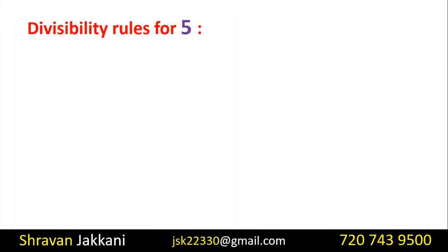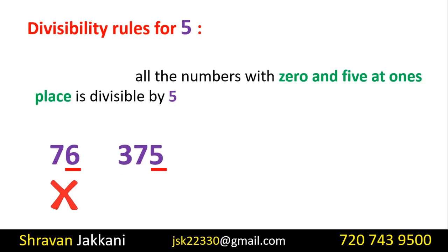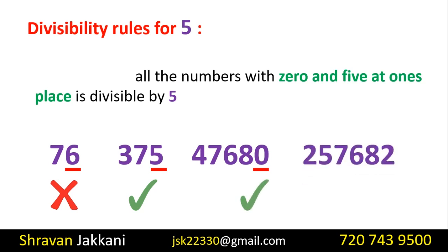Divisibility rule of 5: For example, consider 76. The ones place is 6, so this is not divisible by 5. Consider 375 — the ones place is 5, so this is divisible by 5. A number is divisible by 5 if its ones place is either 0 or 5. This is the divisibility rule of 5.